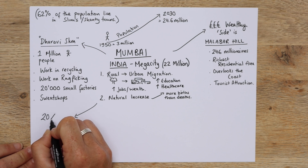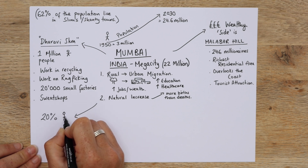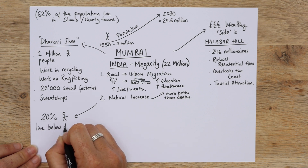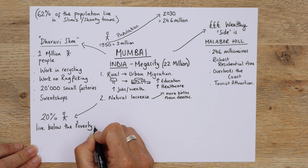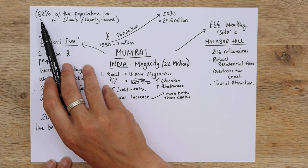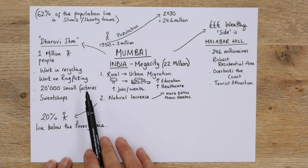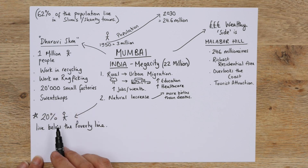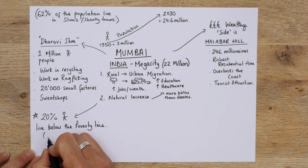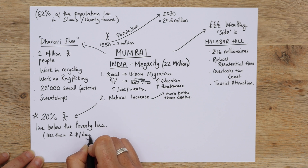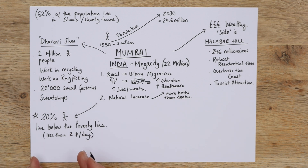20% — here's another good bit of data — 20% of all the people in Mumbai live below the poverty line. If you're not sure what the poverty line is, it's roughly about $2 a day. So if you think 62% are living in slums, some of them are making money and getting by — but 20%, which is a big number, are living below the poverty line, on less than $2 a day. So they are in extremely poor conditions.